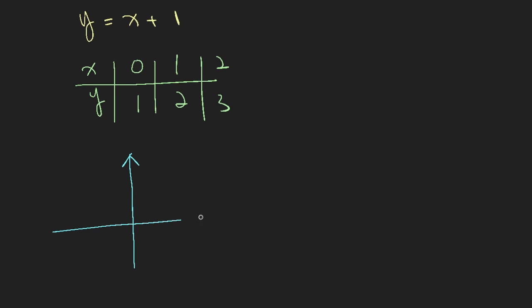Okay, so this is my coordinate, xy-axis, and the first point is 0, 1, which is when x is 0, y is 1, so it's somewhere here. When x is 1, y is 2, so somewhere here. And when x is 2, y is 3, somewhere here. So you can see that this is a straight line.